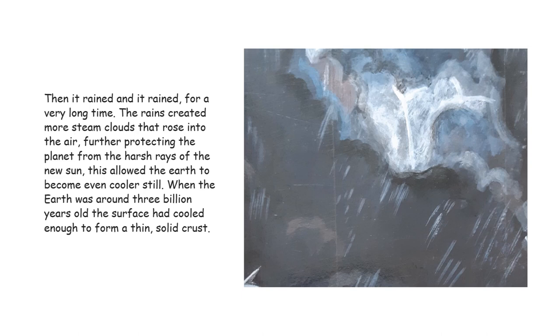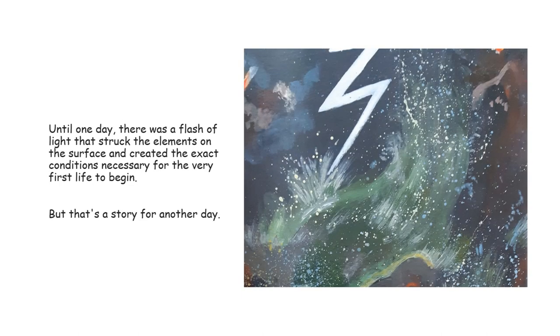Then it rained, and it rained, for a very long time. The rains created more steam clouds that rose into the air, further protecting the planet from the harsh rays of the new sun. This allowed the Earth to become even cooler still. When the Earth was around 3 billion years old, the surface had cooled enough to form a thin, solid crust. Until one day, there was a flash of light that struck the elements on the surface and created the exact conditions necessary for the very first life to begin. But that's a story for another day.